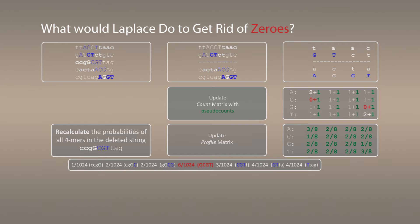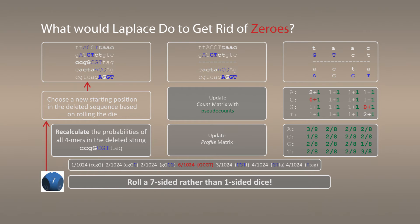And we will get rid of all zeros in probability. Now, instead of rolling one-sided dice, we can actually roll seven-sided dice. Based on the result of seven-sided dice, we will choose a new instance of the motif in the sequence. Afterwards, we iterate, and let's see how our motifs are changing.